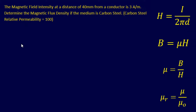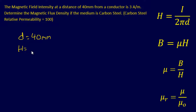For this problem we're going to determine magnetic flux density. The problem states: the magnetic field intensity at a distance of 40 millimeters from a conductor is 3 amps per meter. Determine the magnetic flux density if the medium is carbon steel, and carbon steel's relative permeability is 100. Since most tables provide relative permeability, that's what's given here, so we'll use our calculations to work the problem. We know: distance = 40 mm, H = 3 amps per meter, and relative permeability μᵣ = 100.